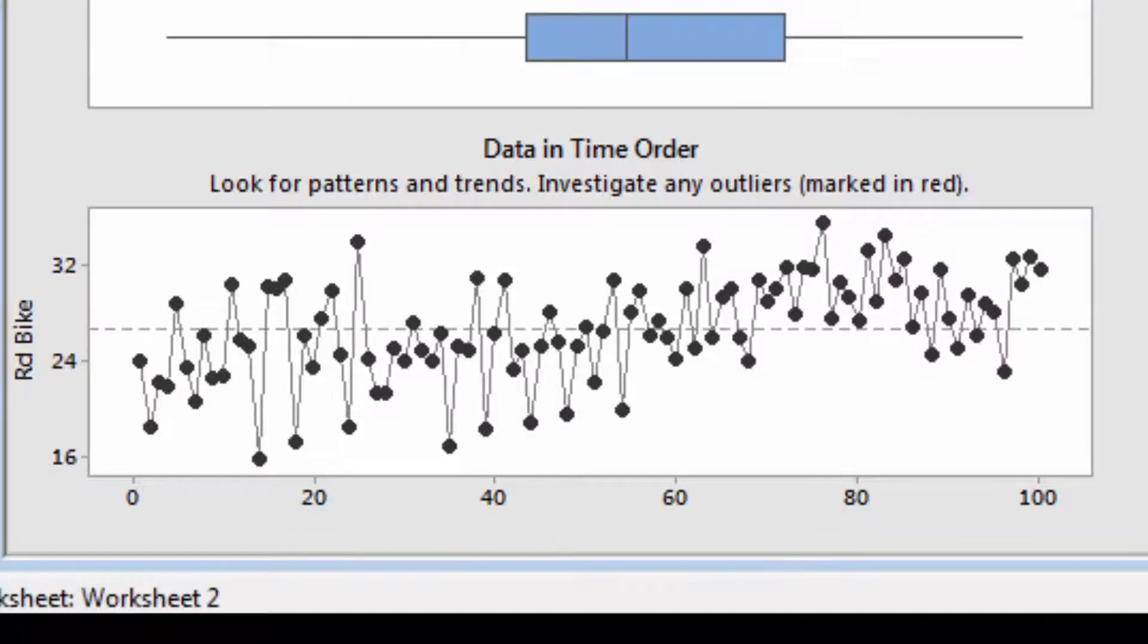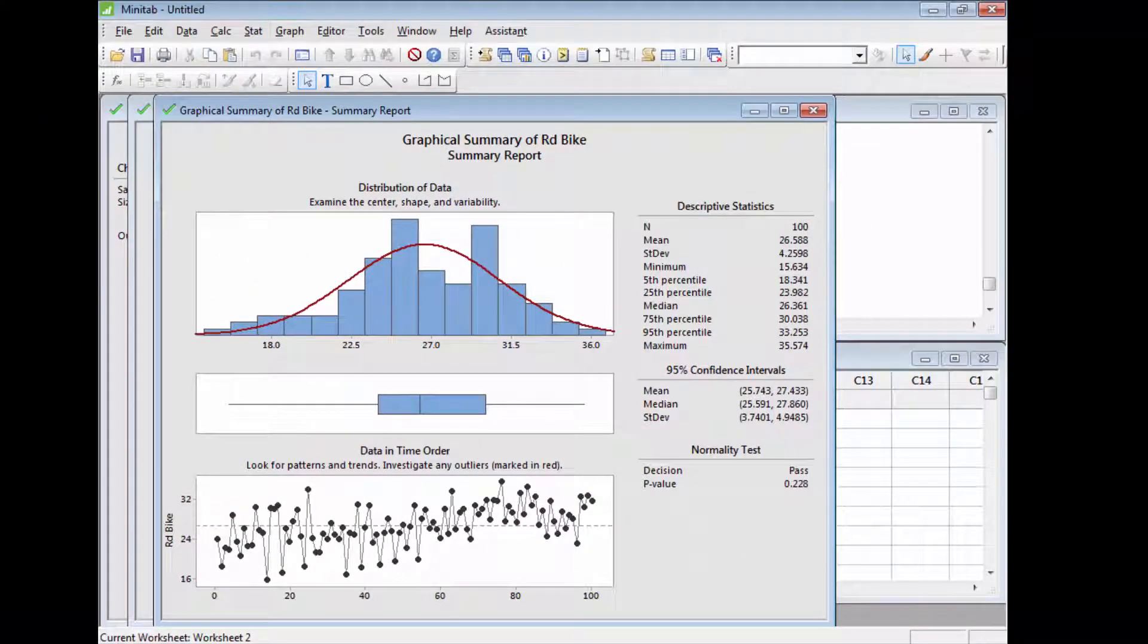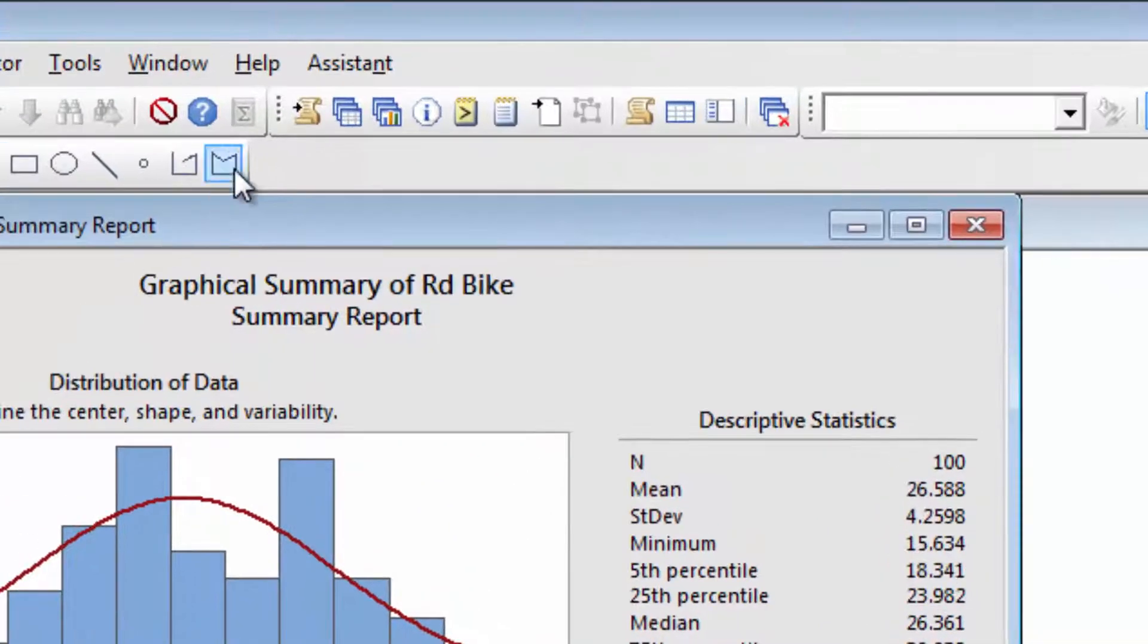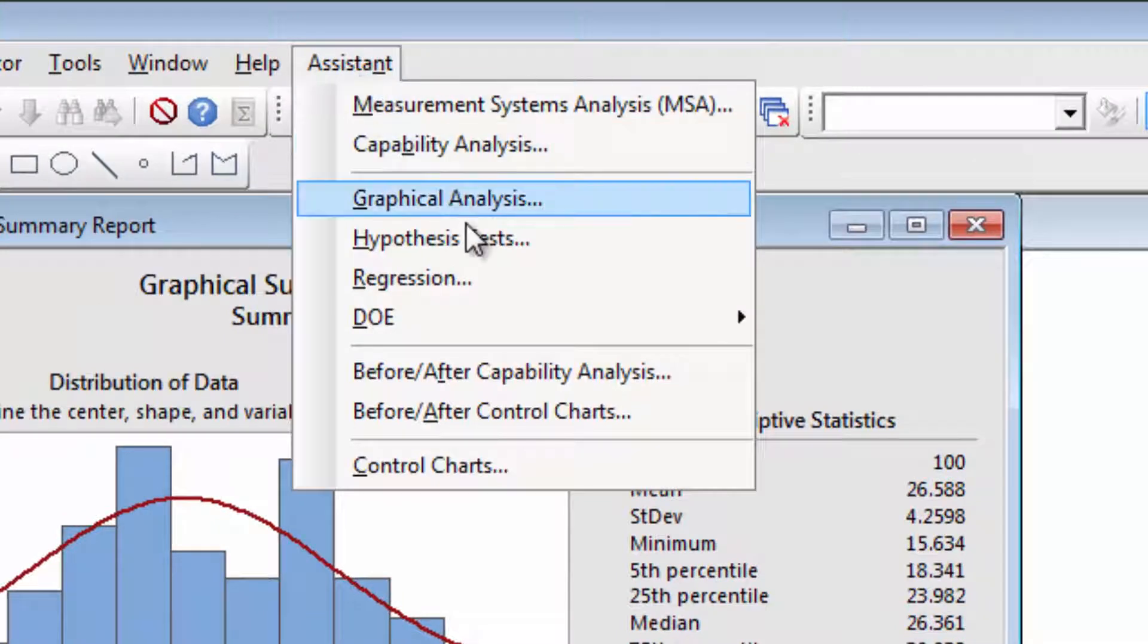His boss may be right. But is the process truly drifting, or is the variation we're seeing just common cause variation that is naturally inherent in the process? The Assistant can create charts to assess the stability of a process. Select Assistant Control Charts.